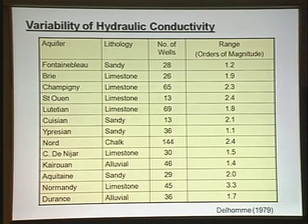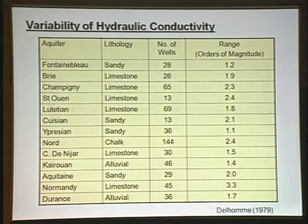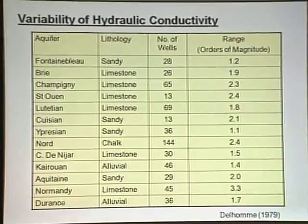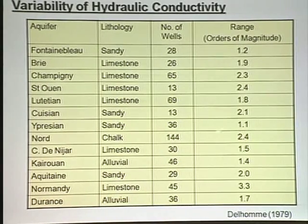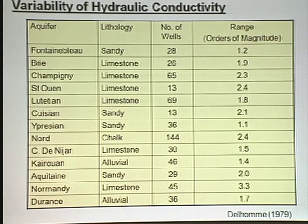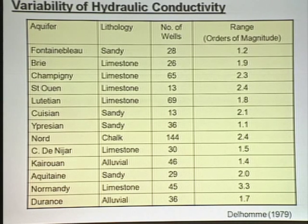One of the issues when we start to get to more complex systems is that hydraulic conductivity becomes more difficult to measure. This is an important early study from the late 1970s — the work of Delon from France. He compiled results from studies where people had measured aquifer hydraulic conductivity with numerous pumping tests in different wells. This is a summary of 13 aquifers from France and northern Africa, with the top and bottom 5% of data removed, showing a one to three orders of magnitude range in hydraulic conductivity within a single aquifer.